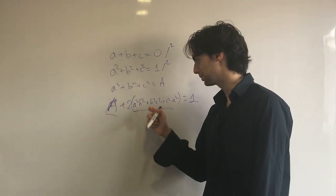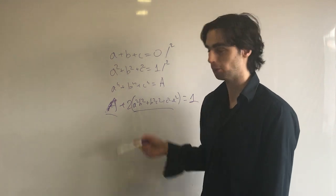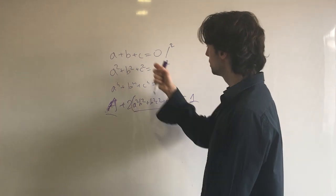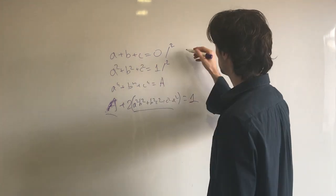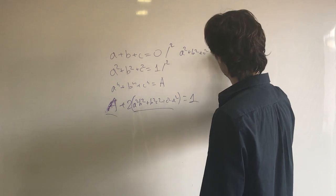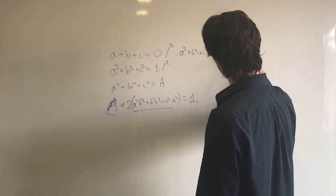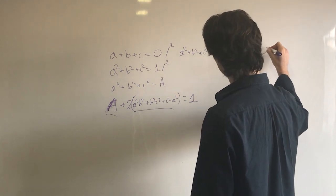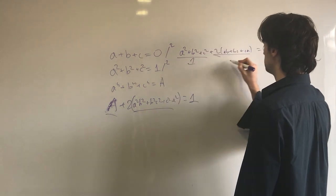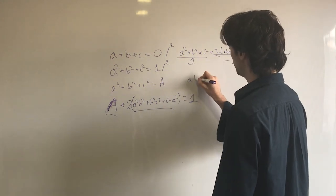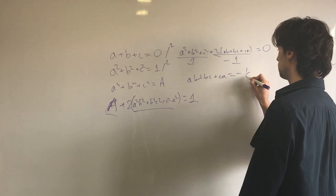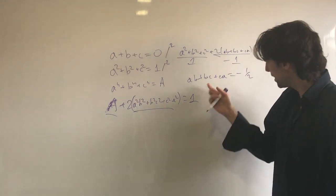Let's square the first equation. We get a² + b² + c² + 2(ab + bc + ca) = 0. This first term is 1, which means the second term needs to be -1. In other words, ab + bc + ca = -1/2.